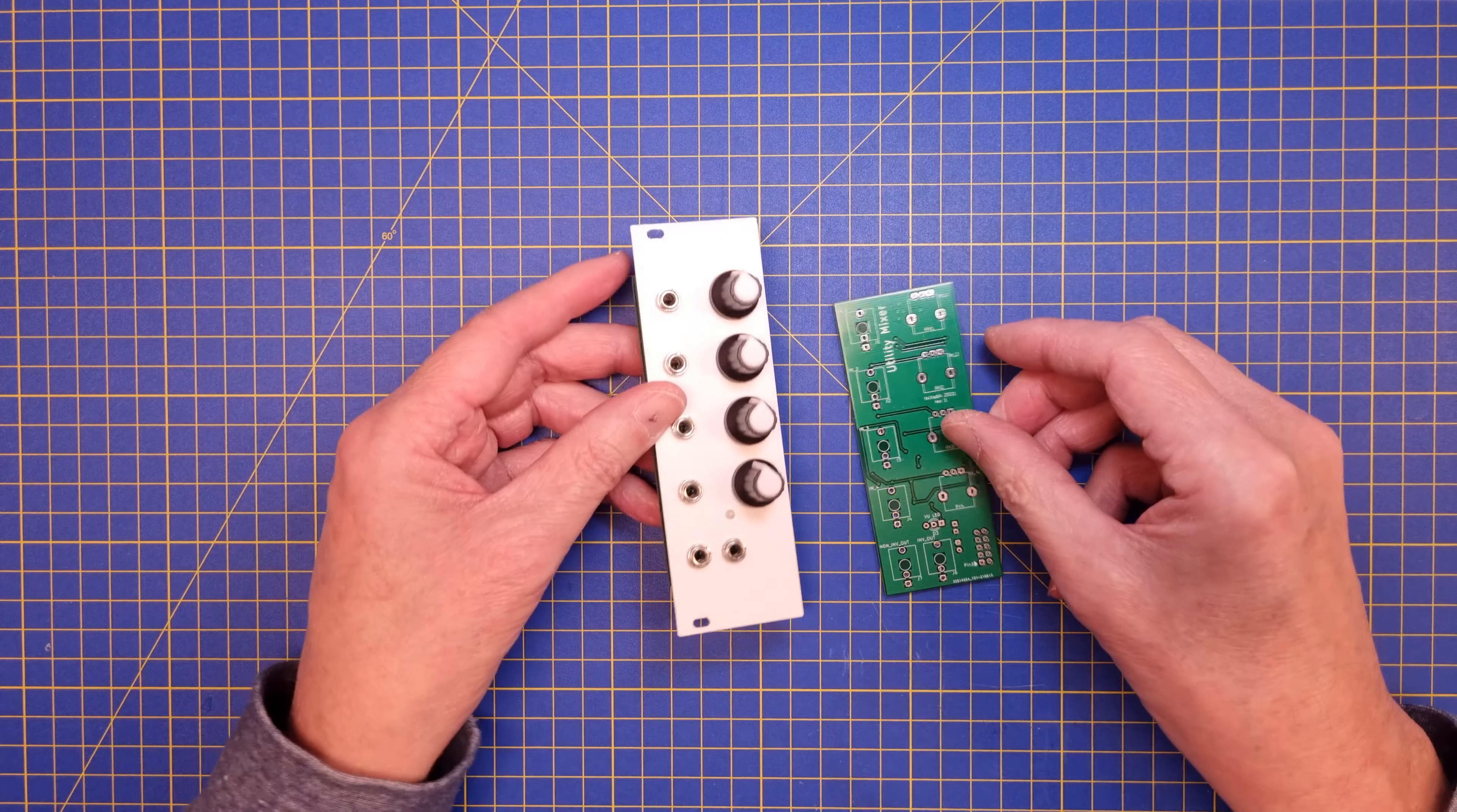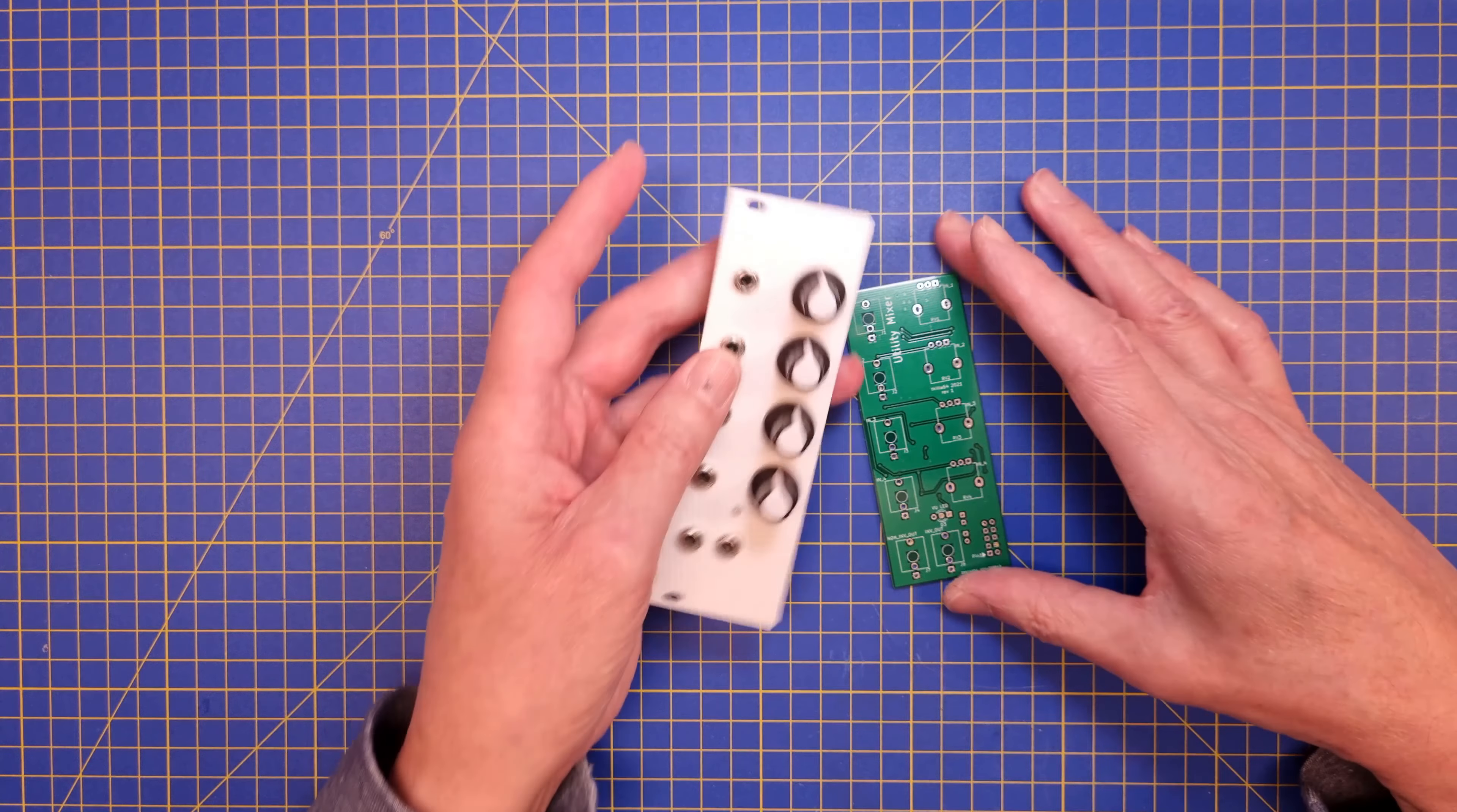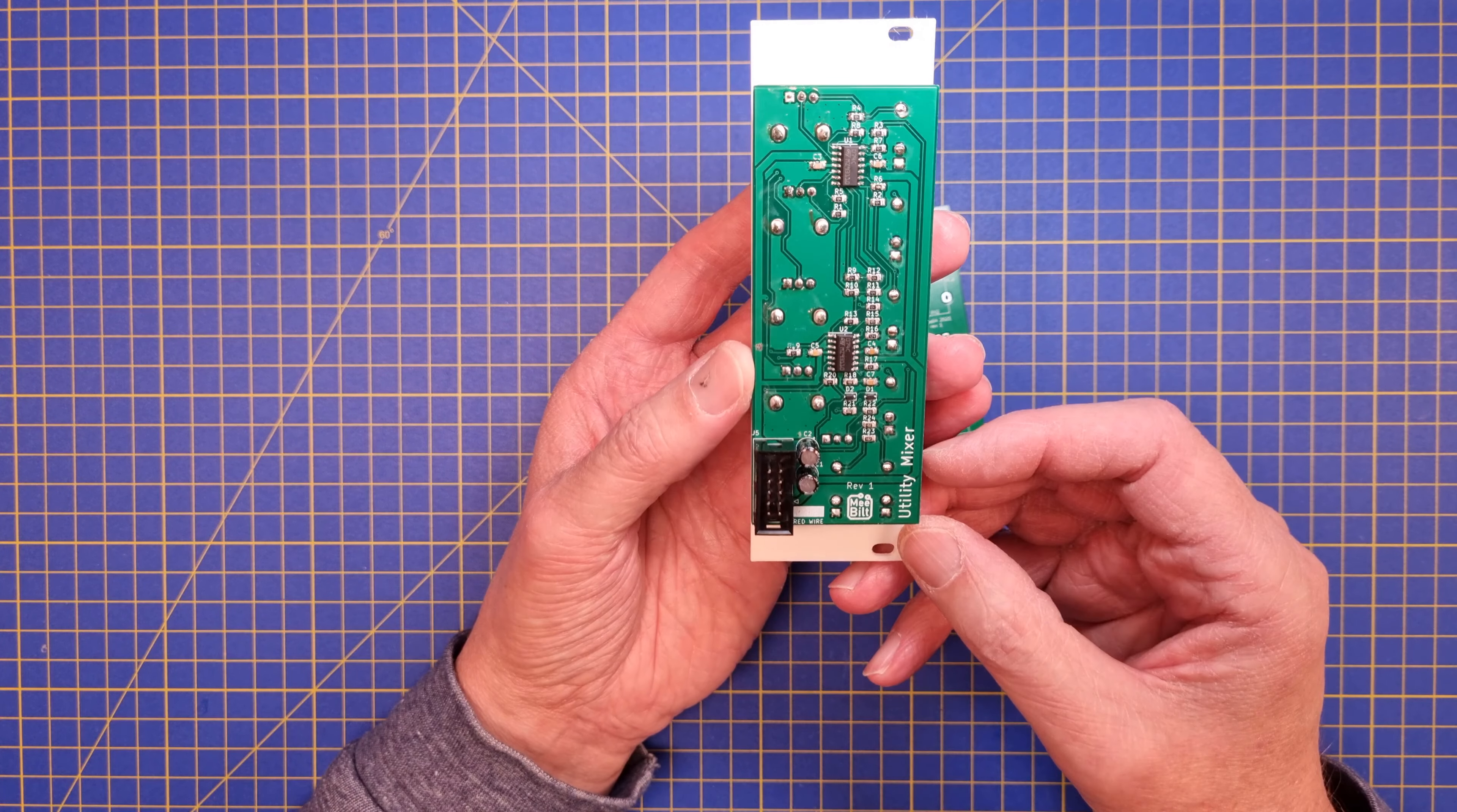But let's start from the beginning and look at the first prototype. So this is the first design and I'm just using a 3D printed panel for this because I wasn't exactly sure about the panel layout. So I didn't want to make a PCB panel for it yet. And the PCB as you can see has lots of surface mounted components. It's basically only the pots and the jacks and the LED and two electrolytic capacitors that are through hole mounted.